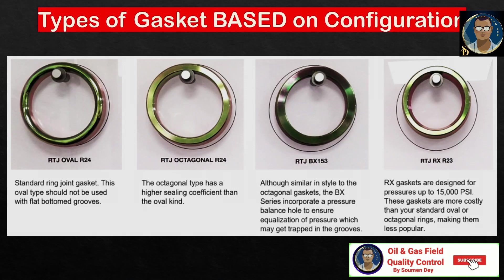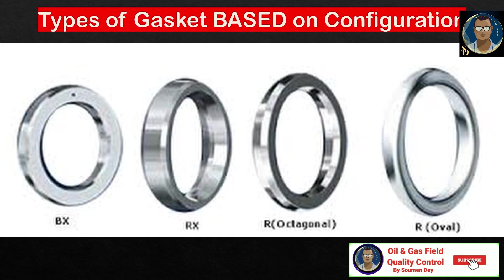Metallic gaskets: metal is used for ring type joints in high pressure applications such as oil and gas production. RTJs are also used on valves and pipework assemblies in refineries and other process industries. They seal by an initial line contact or a wedging action as compressive forces are applied. Metal ring type gaskets are available with oval and octagonal cross sections. The octagonal cross section includes the BX type design, which can seal pressures up to 20,000 psi.